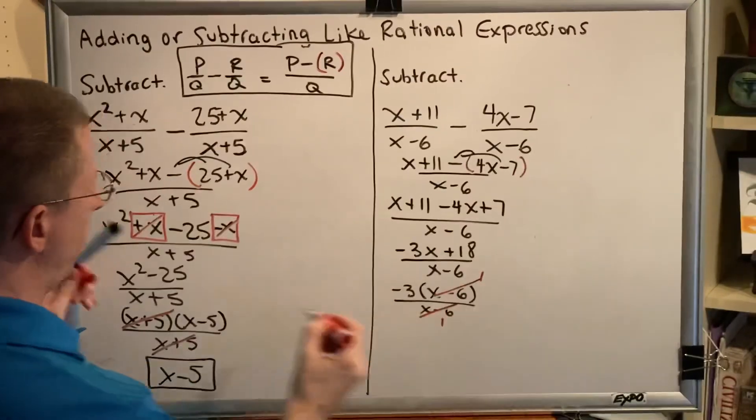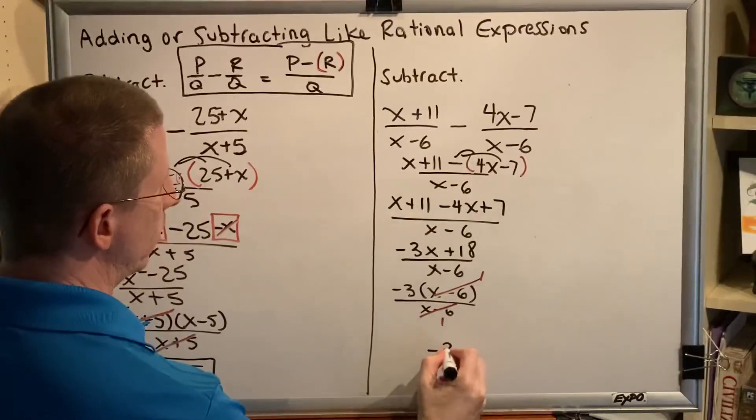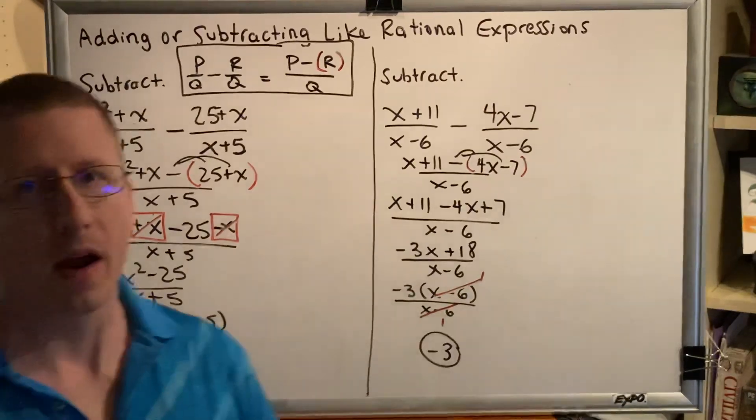When both of those cancel and become 1, then we have negative 3 over 1, which is negative 3. This concludes this pair of problems.